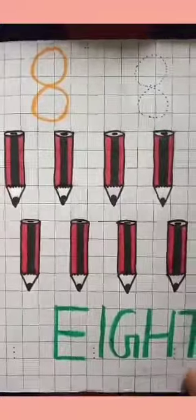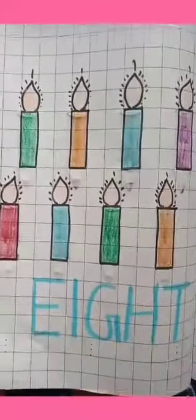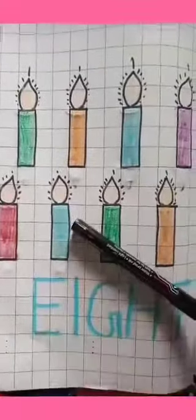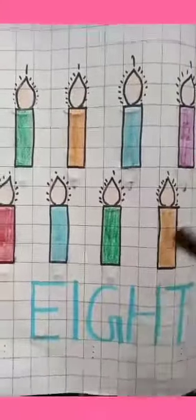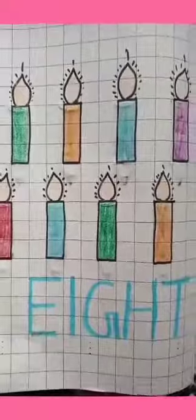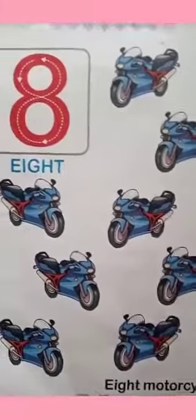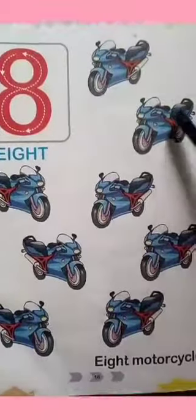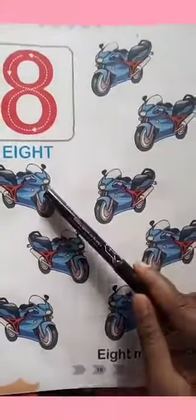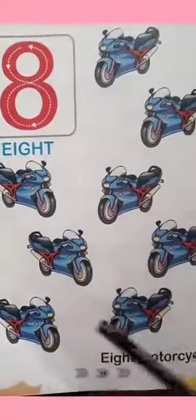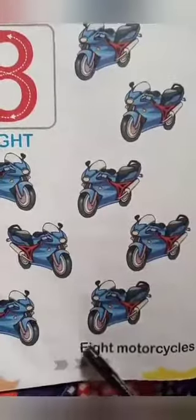Now kids, how many candles are there? 1, 2, 3, 4, 5, 6, 7, 8. There are 8 candles. Now kids, how many motorcycles are there? Let's count: 1, 2, 3, 4, 5, 6, 7, 8. There are 8 motorcycles.